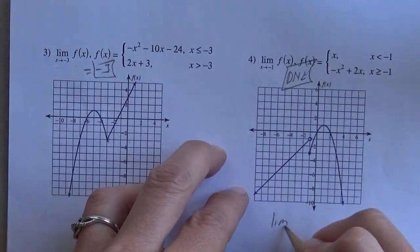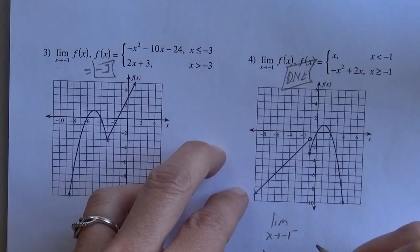So since it's different coming from the left versus coming from the right, this one here does not exist. So for a limit to exist, the limit from the left has to equal the limit from the right.